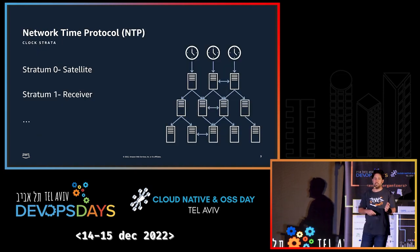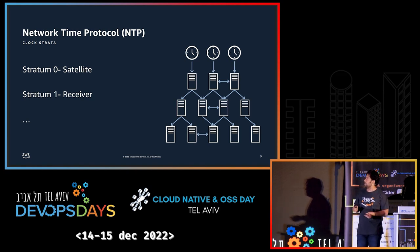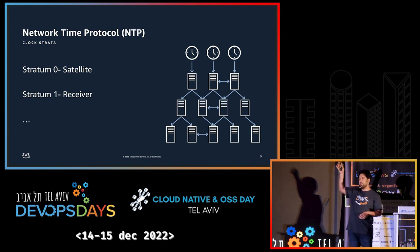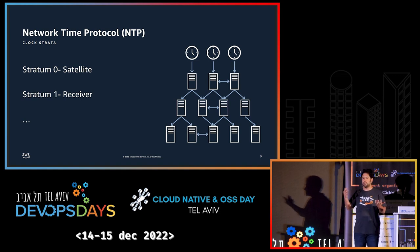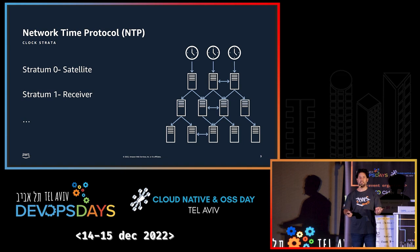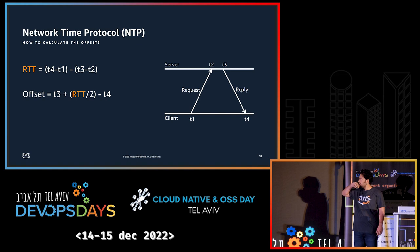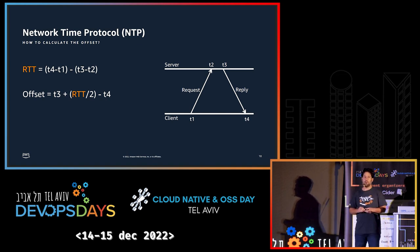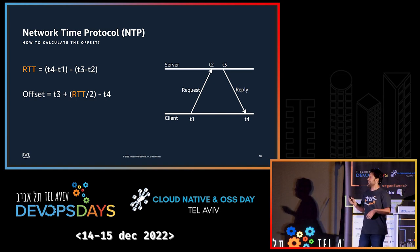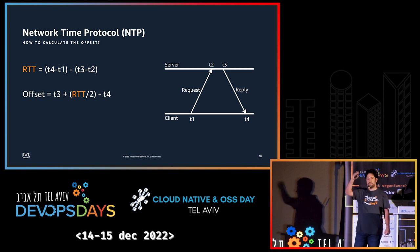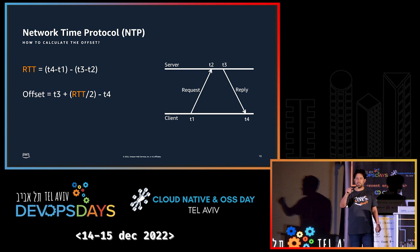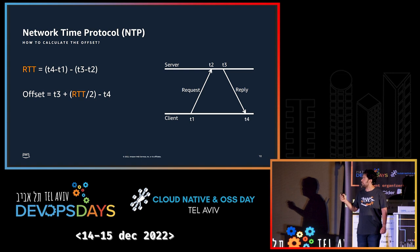So instead we use the Network Time Protocol, NTP. NTP works in layers called strata. Layer zero is the satellite; stratum one is a server with a receiver that gets time from the satellite, and so on. The protocol is simple: the client asks for the time, the server responds, and we assume the round trip is symmetric — then divide by two to estimate one-way delay and calculate the offset of our local clock from the server.